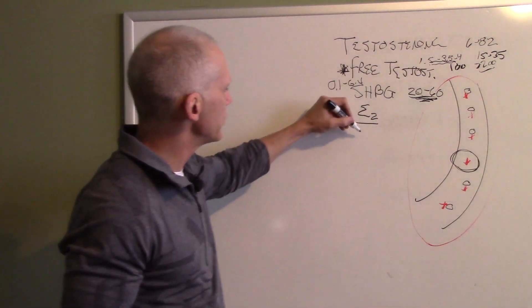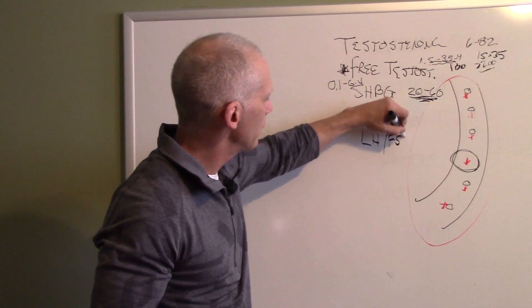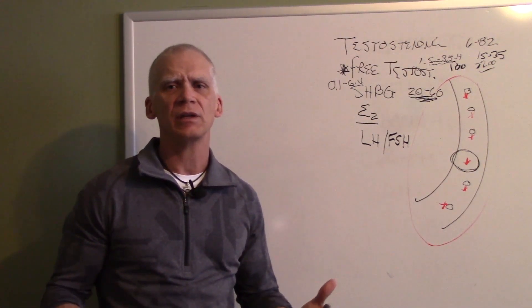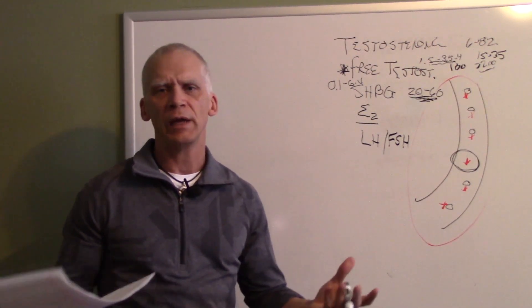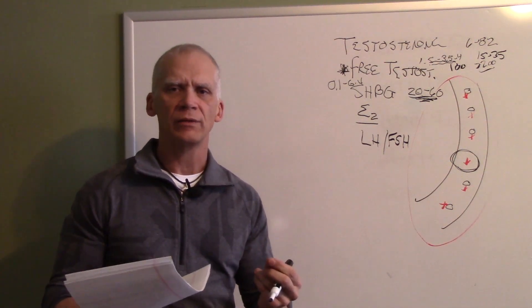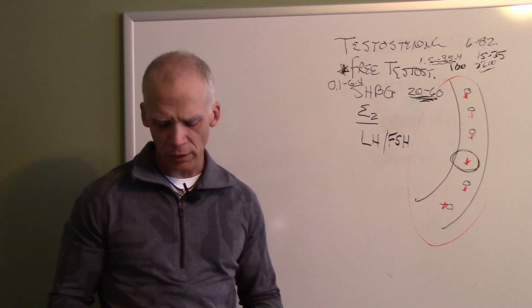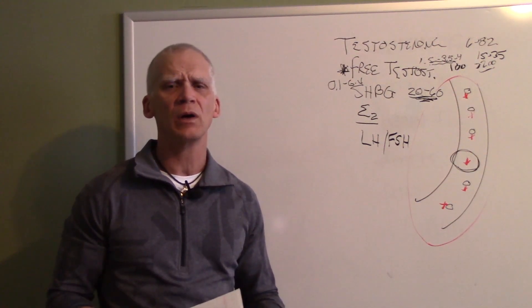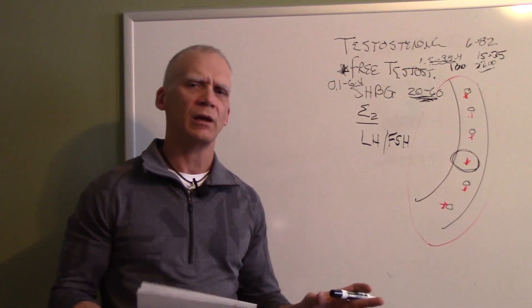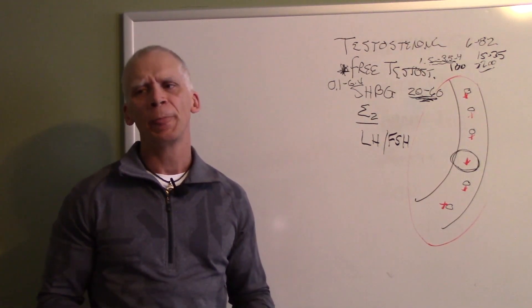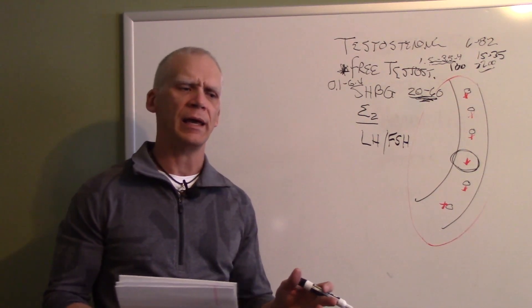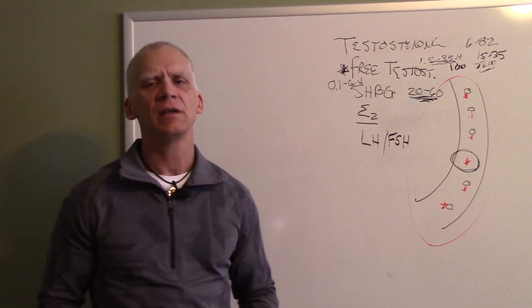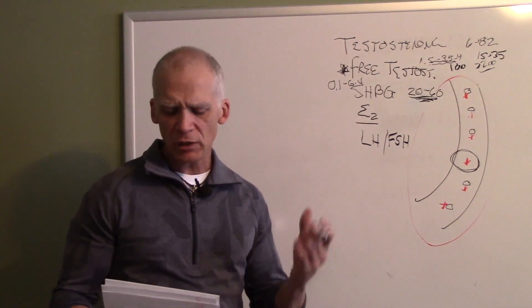We also want to look at LH and FSH because we want to know what the pituitary is doing. We want to look at the thyroid and not just TSH and total T4, total T3, T3 uptake. I want to see what the free T3 and free T4 is because the thyroid can have a profound effect on testosterone production. The other thing is cortisol. Cortisol is one of those things that's hard to really get a good grasp on. We'll typically just do a screening with an AM cortisol to see where that is.